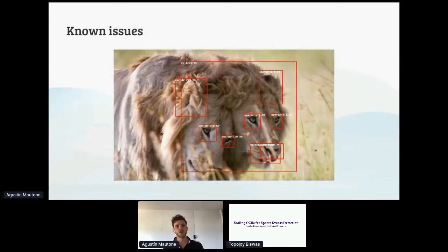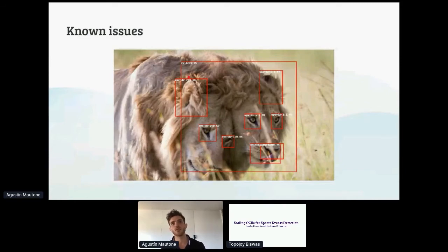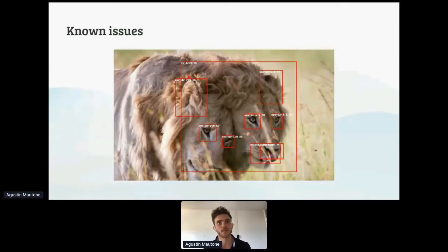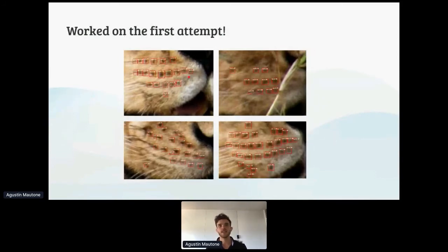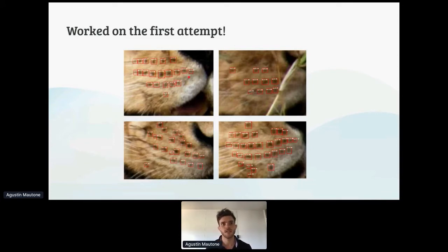Obviously, as with most machine learning models, it's very hard to get all cases correct. A known limitation: when lions get too close to each other, the model predicted a single head. This is very common in machine learning since it's hard to generalize to all edge cases. Still, we thought the overall performance was really good. Applying the same techniques to whisker spot detection, we got decent results — the only issue being that since images don't have great resolution, it's sometimes hard to tell whether the prediction was correct.